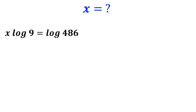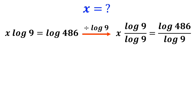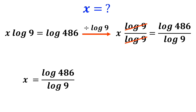So this expression becomes x times log of 9 equals log of 486. Now we divide both sides by log of 9, the log of 9 terms cancel out, and this simplifies to x equals log of 486 over log of 9.